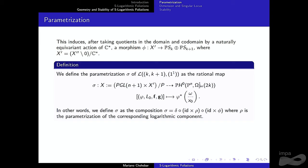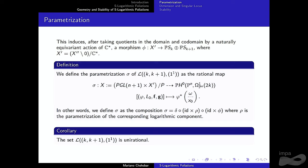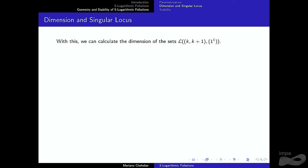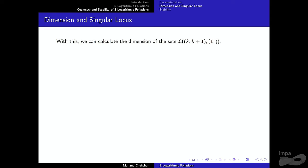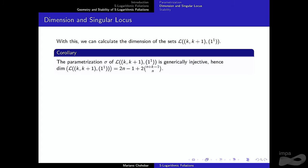With this rational parametrization, the S-logarithmic component is unirational. We can study its geometry via this parametrization — for instance, compute the dimension. PGL(n+1) and the parameter space P have specific dimensions, and X′ is a quotient of a sum of polynomial spaces, making dimension straightforward: sum dimensions for products, subtract for quotients. The parametrization is generically injective, so the dimension equals the dimension of the domain.